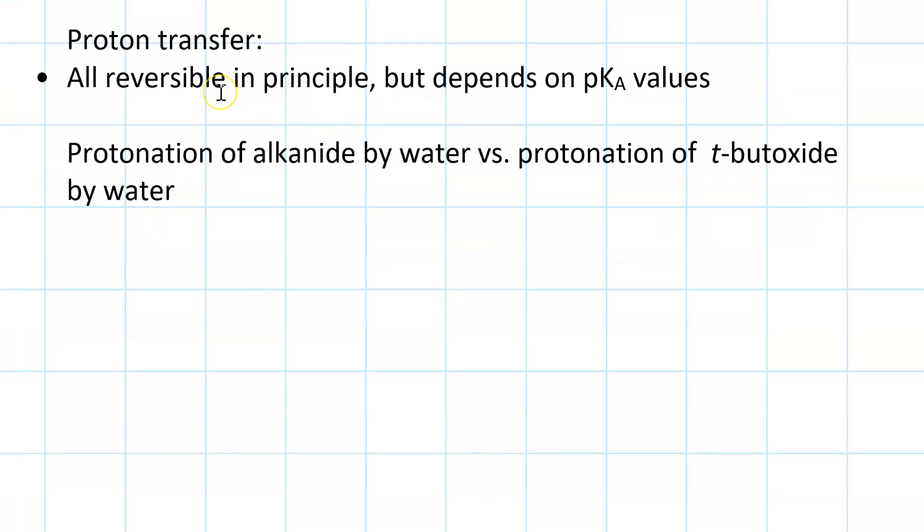Proton transfer is reversible in principle, but it depends on the pKa values on either side of the reaction arrow. If you have a difference greater than 6, that's a factor of a million, and at that point we're talking effectively irreversible. Let's look at an example.